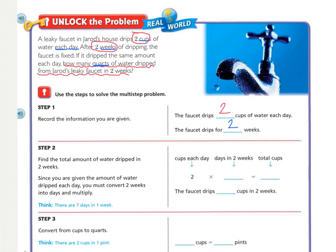The next step is to actually do one of our conversions. So find the total number of water dripped in two weeks. So how can we do that? Well, since we're given the amount of water each day, we now need to convert our weeks into days and then multiply. And the reason why we multiply is we're going from a larger unit of weeks into the smaller units of days. So remember, when you go from larger to smaller, you are multiplying. So how many cups each day did we have? We had two.